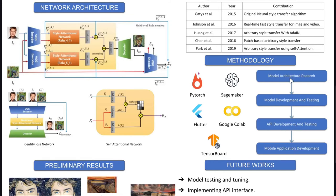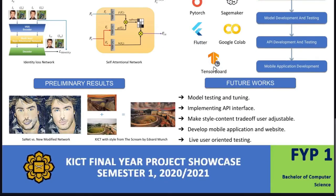Model architecture research can be grouped with model development and testing. I have completed the first two parts this semester; the remaining two will be next semester, inshallah. For tools: PyTorch will be used to develop the model, Amazon AWS SageMaker to host the API, Flutter to build the mobile and desktop applications, and Google Colab for initial training and testing. TensorBoard may also be used to monitor training results.